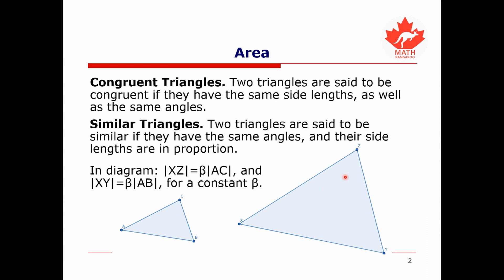These are two similar triangles with a constant of proportionality beta. If beta were equal to one, we would essentially have two copies of the same triangle, and that would be exactly the case when we have two congruent triangles.